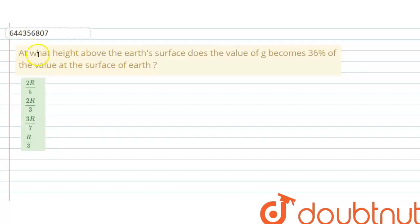Hello everyone, I will solve this question for you. At what height above the earth's surface does the value of g become 36% of the value at the surface of earth?